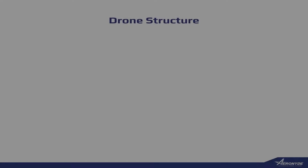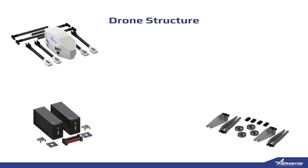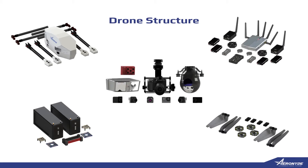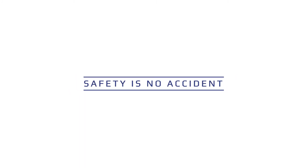We broke up the structure of a drone into five categories: body, propulsion, power, electronics, and the payload. All drone parts and components are vital to ensure a smooth and safe flight. However, not all components are the same for each drone — they can differ depending on the application. Remember, safety is no accident. Every component should be inspected before every flight.